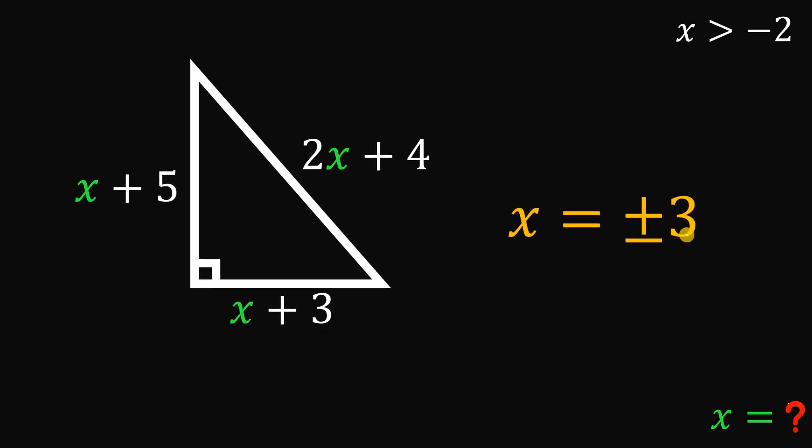Now, we found x equals positive or negative 3. But take note that x is greater than negative 2. So negative 3 cannot be a value for x. Therefore, we eliminate the negative value of x.